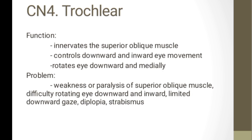Cranial nerve 4 is the trochlear. Its function is to innervate the superior oblique muscle, controlling downward and inward eye movement, rotating the eye downward and medially. Problems include weakness or paralysis of the superior oblique muscle, difficulty rotating the eye downward and inward, limited downward gaze, diplopia, and estrabismus — also known as crossed eyes or 'duling' — where eyes are misaligned or deviate from normal position.